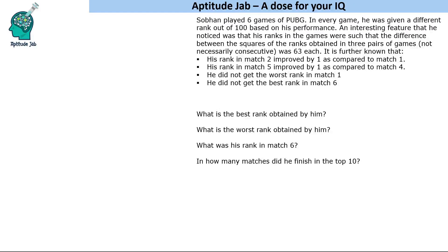Welcome to Aptitude Jab. This is a number puzzle: Shoban played six games of PUBG, and in every game he was given a different rank out of 100 based on his performance. An interesting feature he noticed was that his ranks in the games were such that the difference between the squares of the ranks obtained in three pairs of games — not necessarily consecutive — was 63 each.